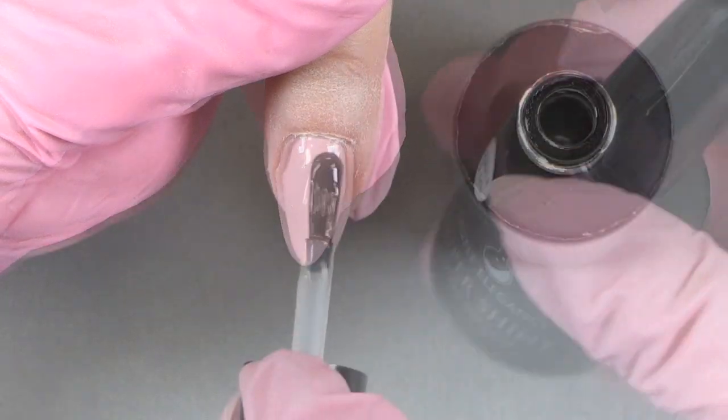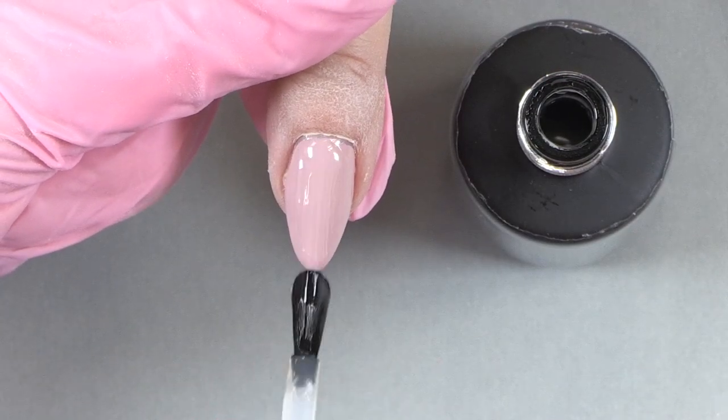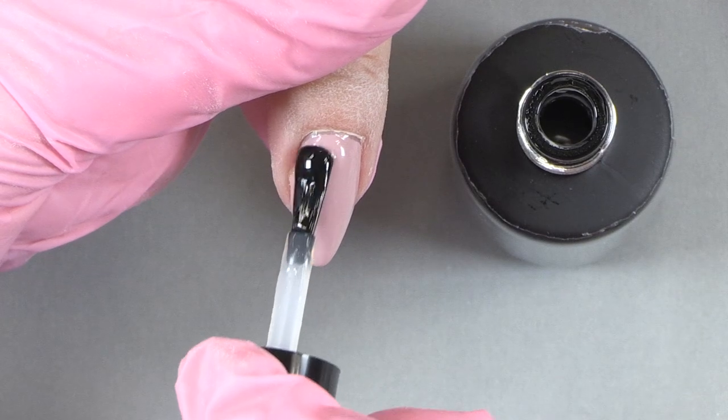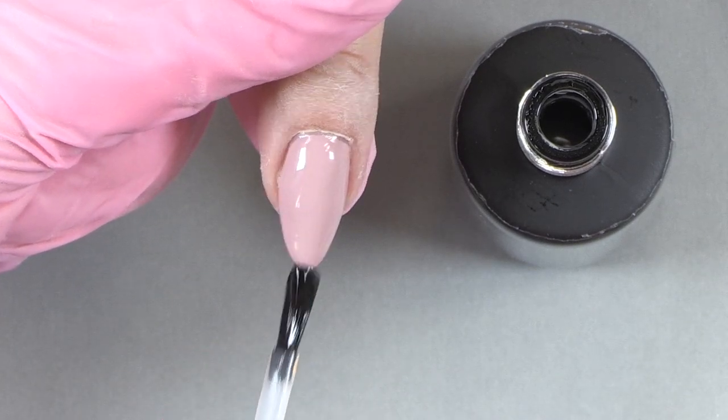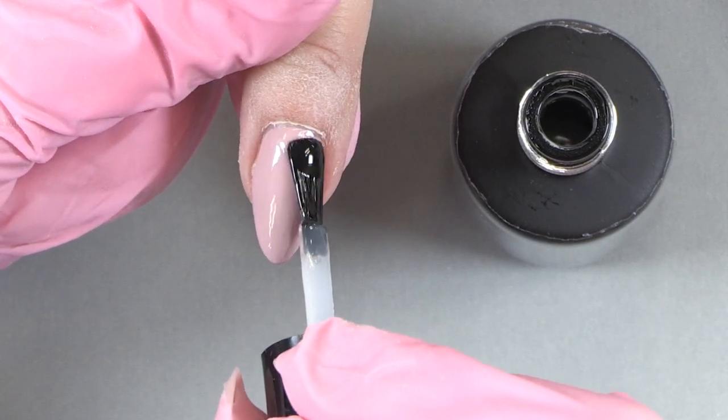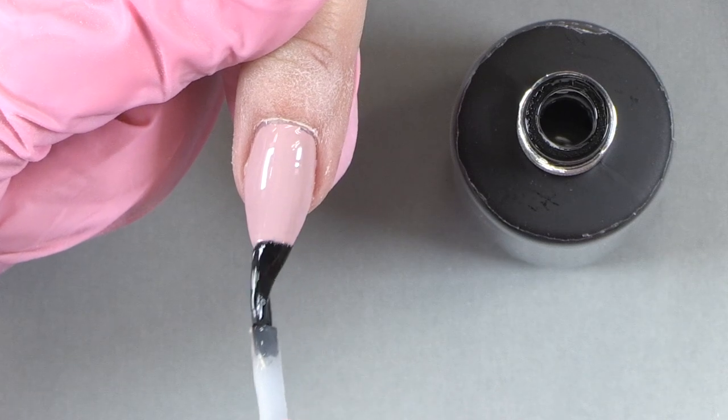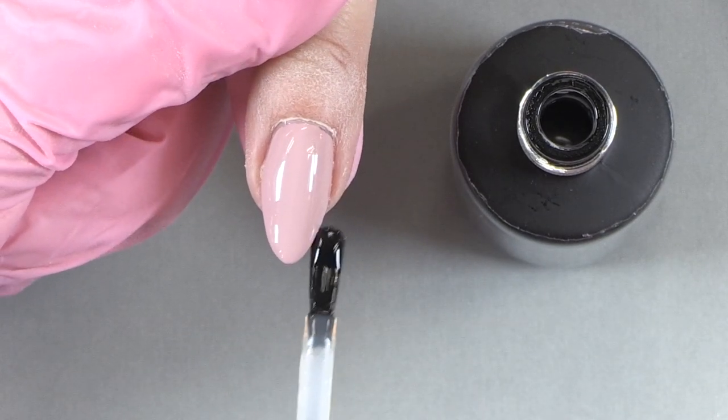We're taking the Light Elegance super shiny and applying it right over the top of that buttercream. From cuticle to free edge, capping your free edge. Cure for one minute in the Light Elegance dot.